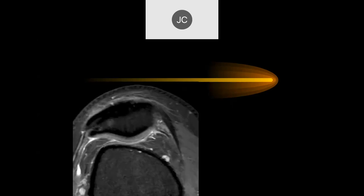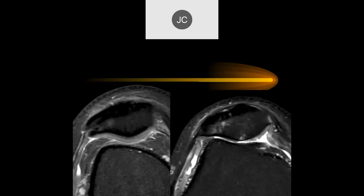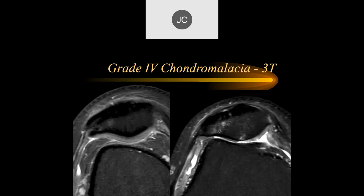On the PD fat sat, we can see nice intact cartilage here in another patient. This is actually another location farther down in this patient, and we can see there's extensive grade 4 when we get to the area of abnormality with subchondral bone edema.